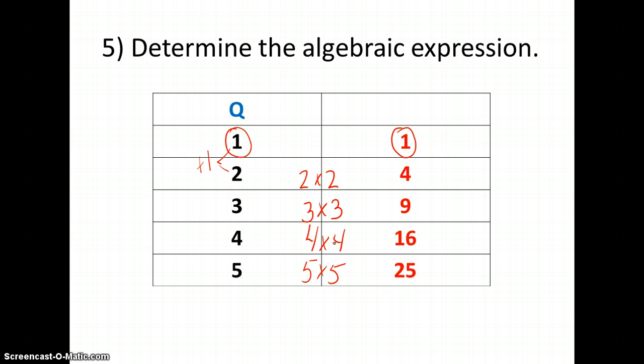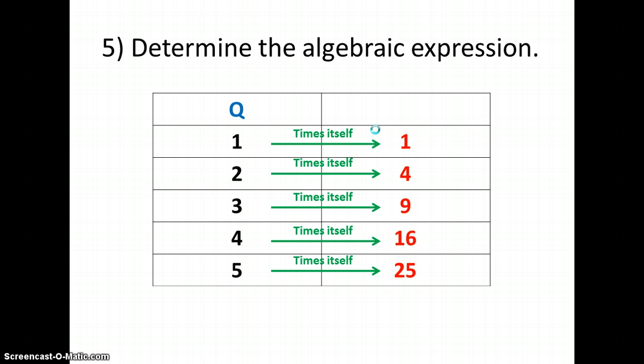So let's look back at that one column. Using my pattern, where I am multiplying each Q value by itself, I can look back and say, 1 times 1 equals 1, and it still fits my pattern. So in this case, I am taking Q and multiplying it by itself, or written with exponents, I am actually taking Q and squaring it.